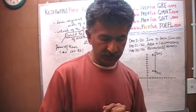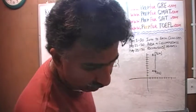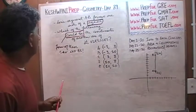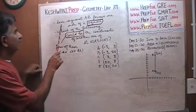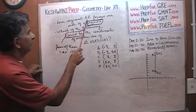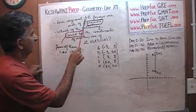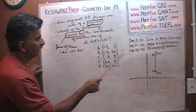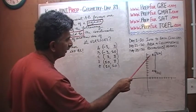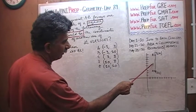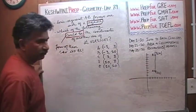Today is our lesson number 29. The problem for today is already on the blackboard. I am going to read it to you. Line segment AB forms one side of a square — line segment AB, right here, A to B.